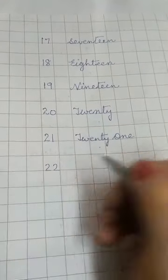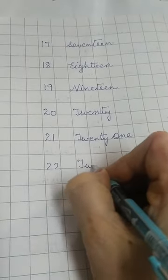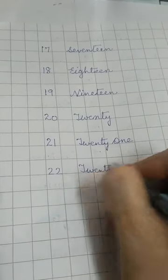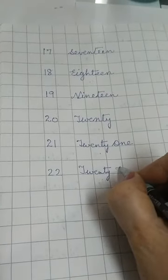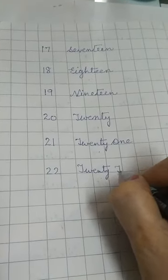22. T-W-E-N-T-Y, twenty. And 2 are T-W-O, two. Twenty-two.